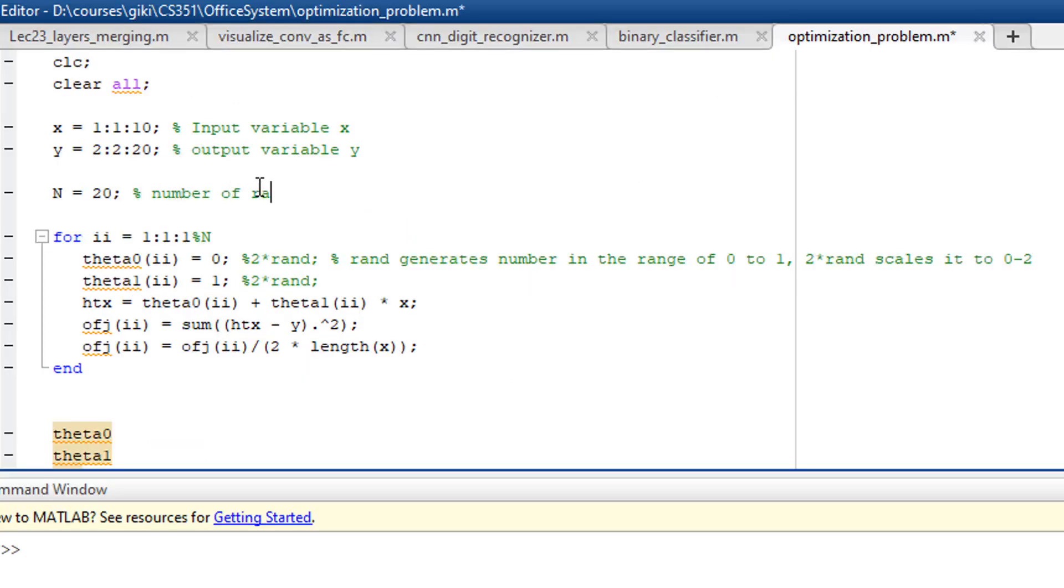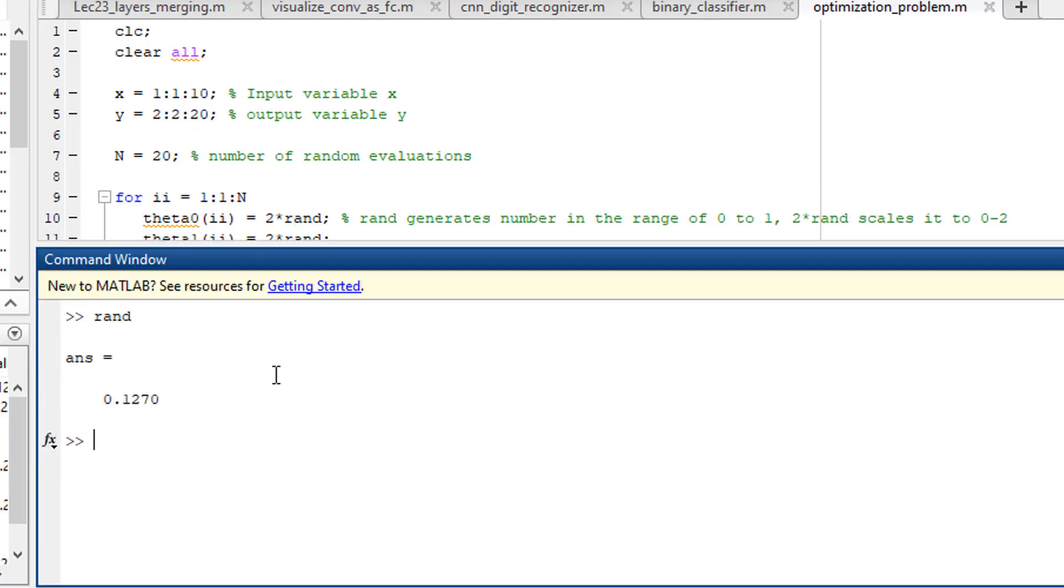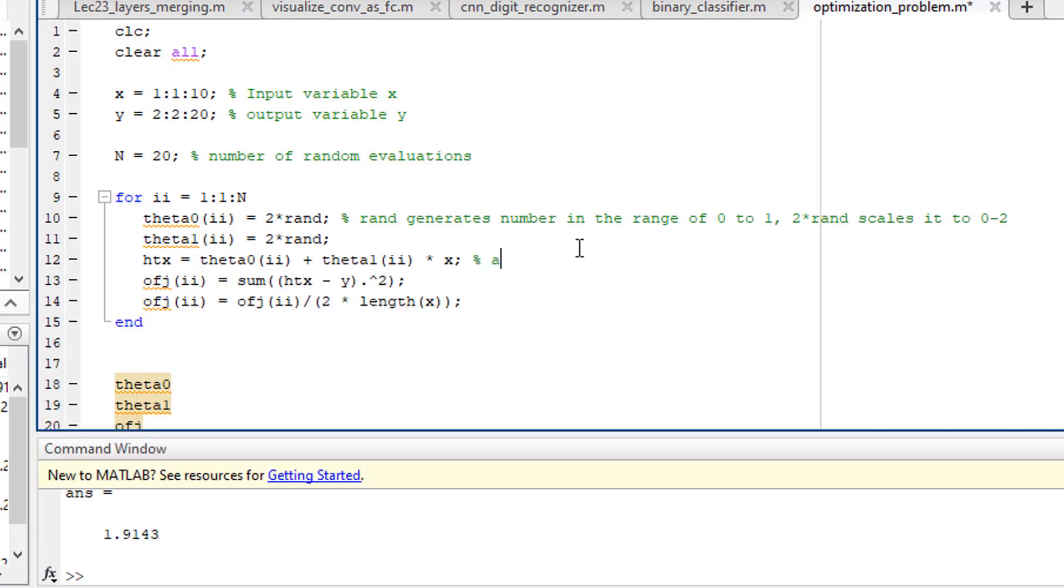The variable N shows the number of random guesses or in other words the population size. For random number generation we use the rand function in MATLAB which generates numbers in the range of 0 to 1 from a uniform distribution. Multiplying it by 2 scales the range from 0-1 to 0-2. On line 12 we compute the current estimate based on our assumption which is theta 0 plus theta 1 times x.